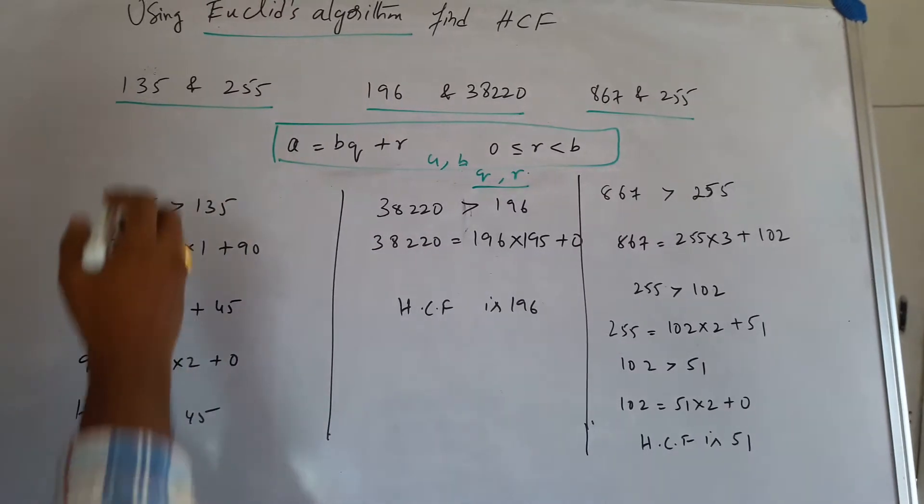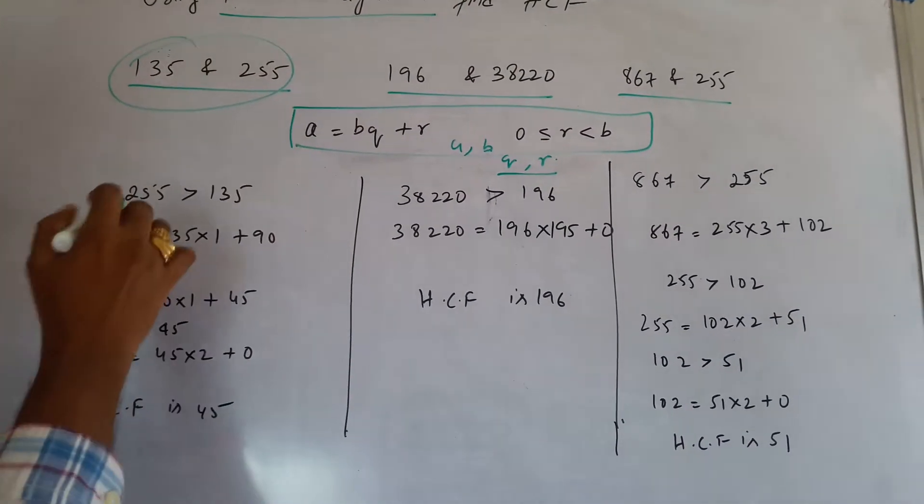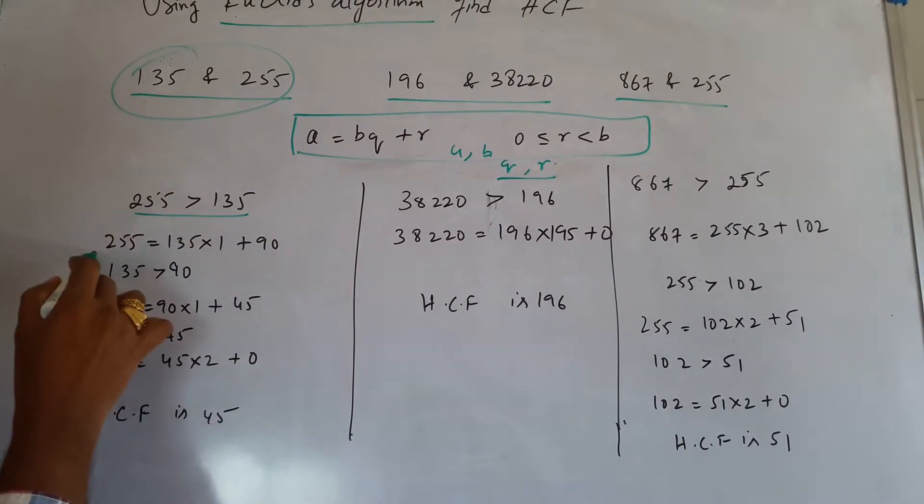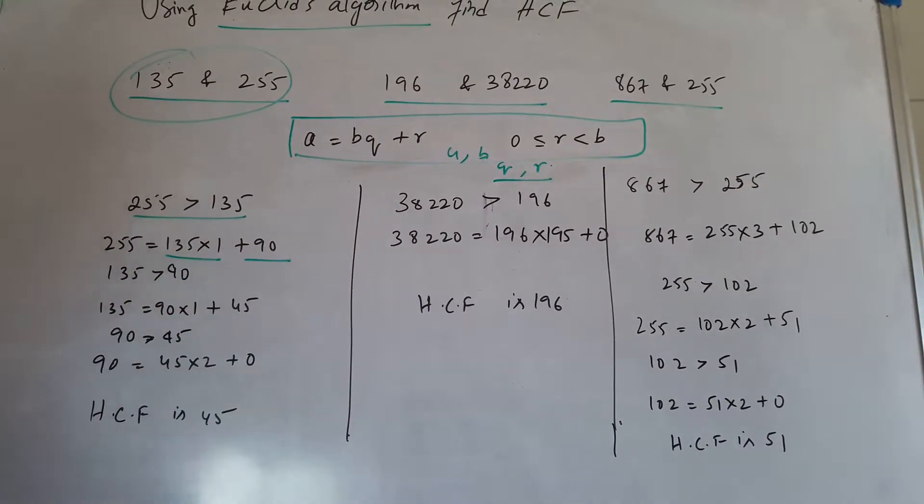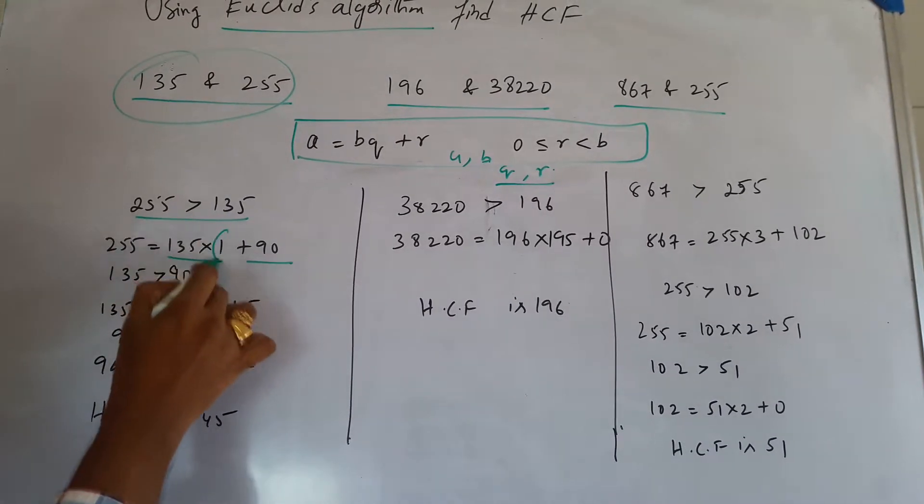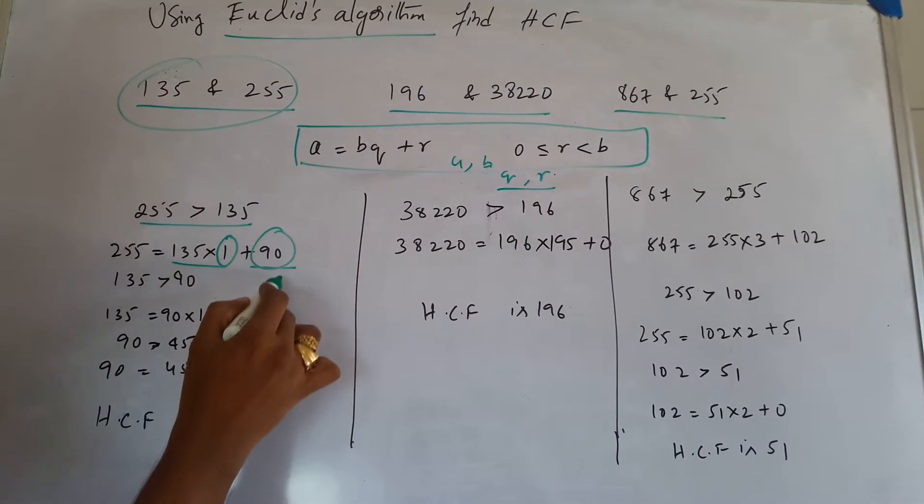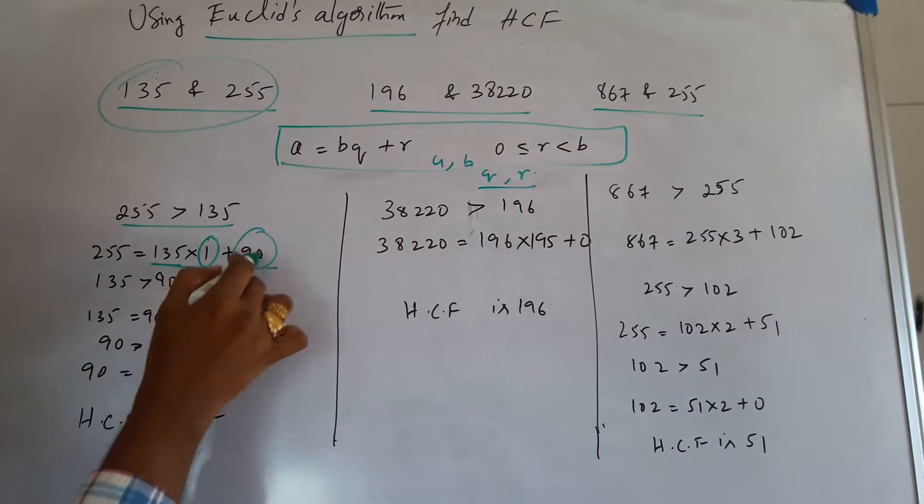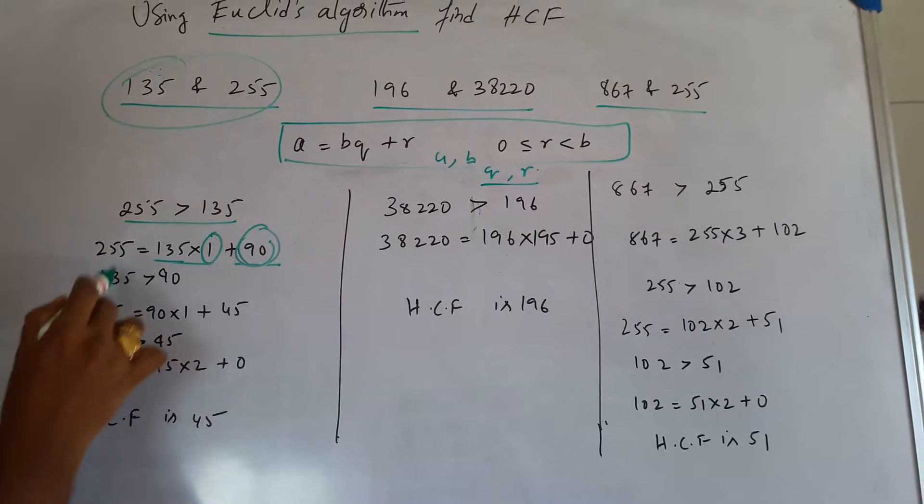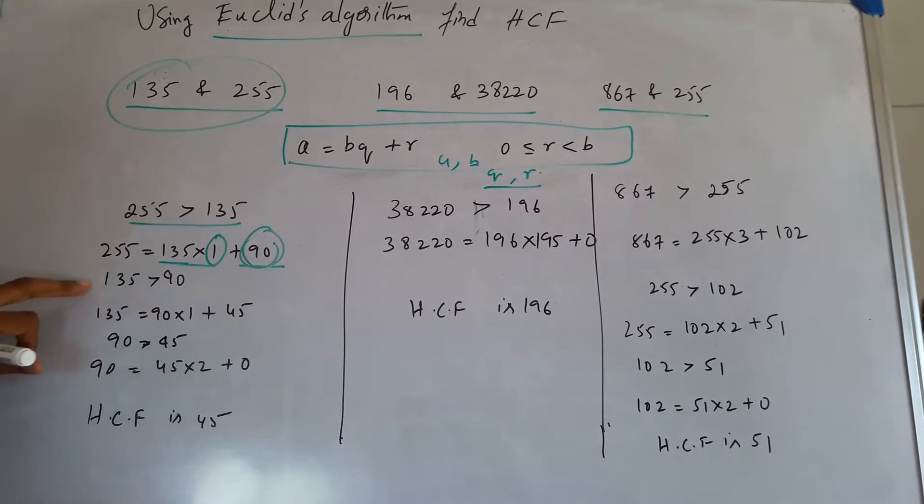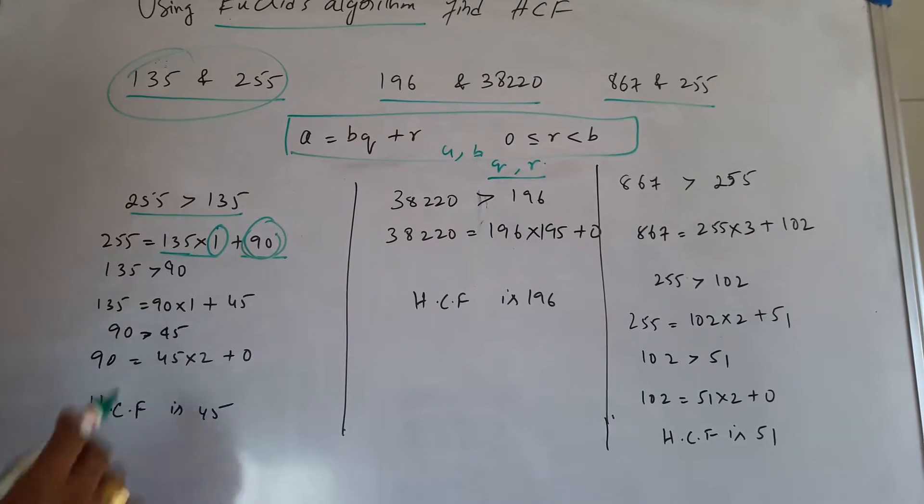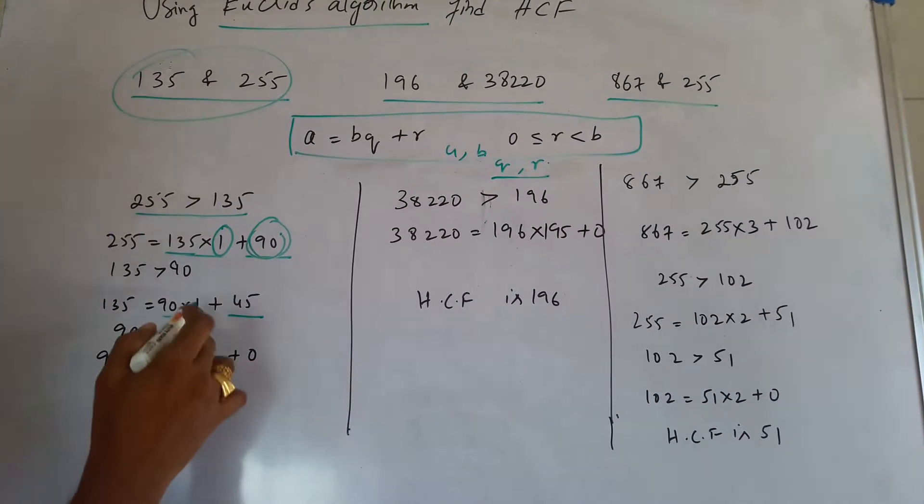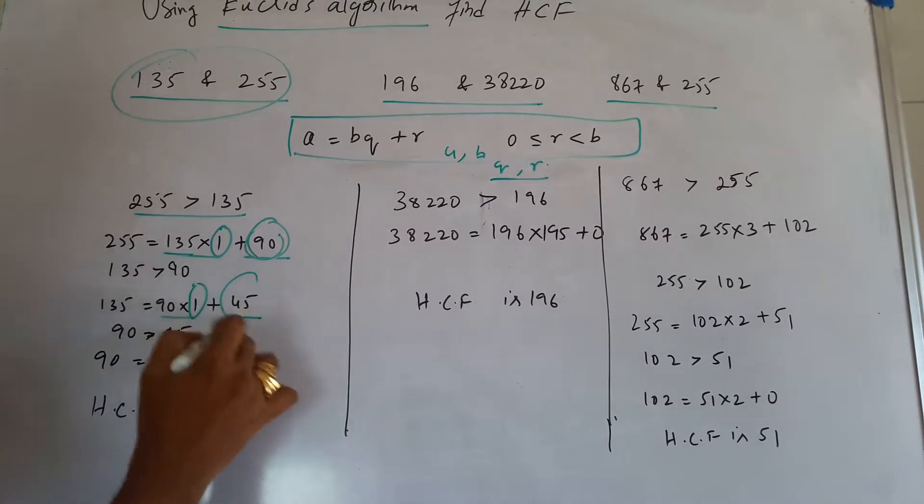Now if you look at the first problem, here you find that 255 is greater than 135, so this can be split in this form. It is a multiple of 1 having the remainder as 90. Again we take this and this, and when you find that 135 is greater than 90, this can be split in this form, multiple of 1 and the remainder being 45.